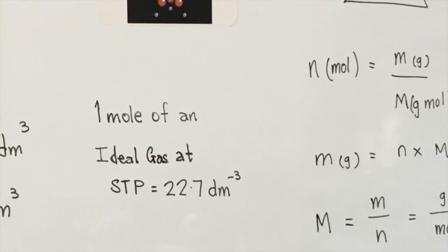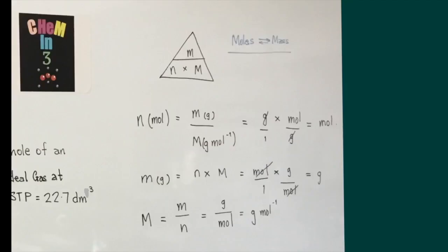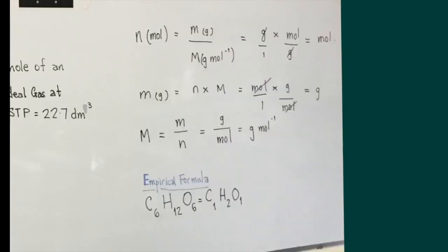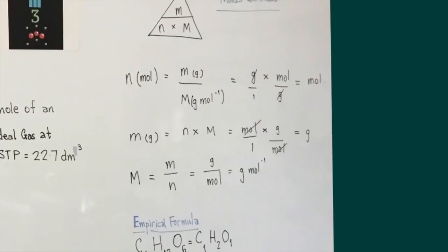Another important application is the fact that one mole of an ideal gas at standard temperature and pressure occupies 22.7 dm³. We also use conversions of mass to moles and moles to mass. The empirical formula is the simplest ratio of the number of moles of each element in a molecule — for instance, C₆H₁₂O₆ (glucose) has an empirical formula CH₂O. It's convenient to arrange these conversions in a triangle to recall all possible conversions, and it's important to understand how units cancel.